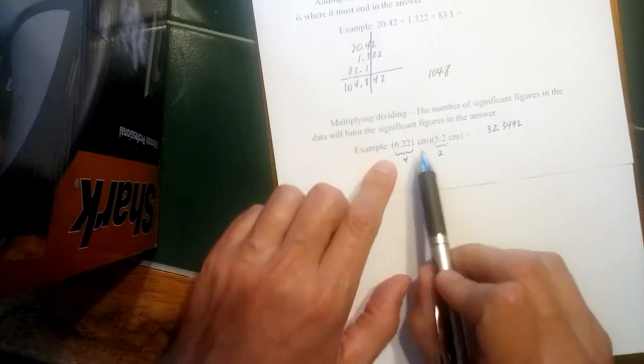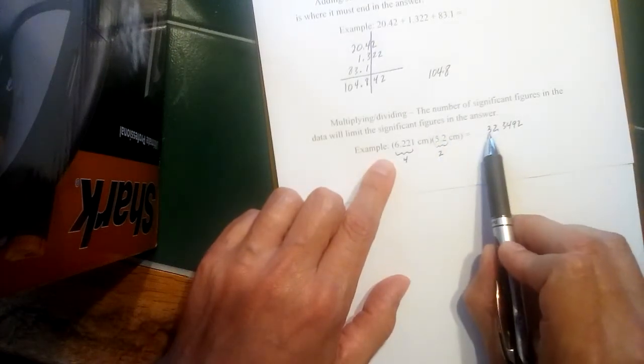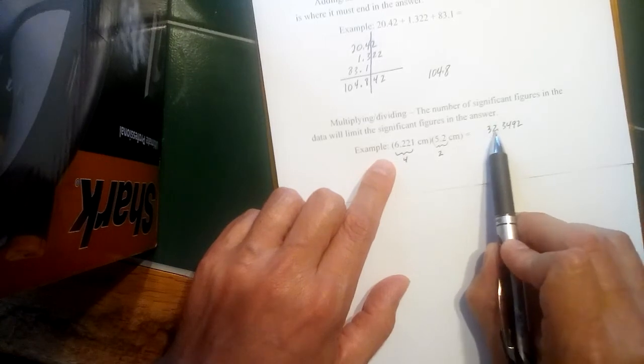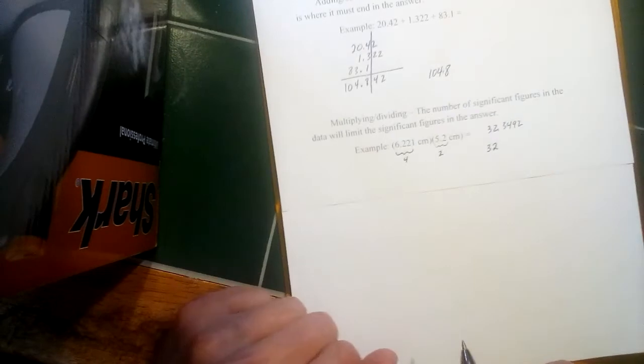But it's up to us to evaluate the significant figures. And since we're limited to two, we can only keep the first two. We keep one here in the tens and one here in the ones place. So our answer here should just be 32.